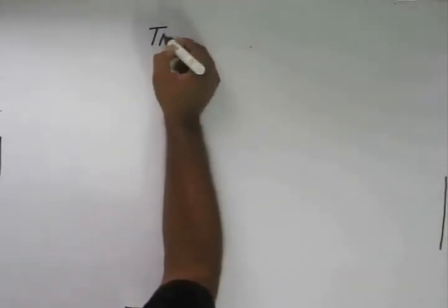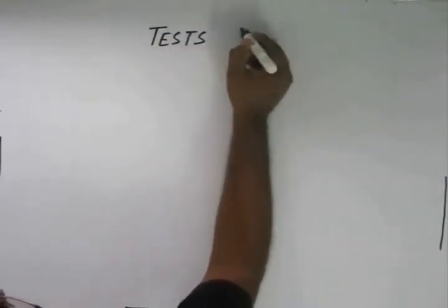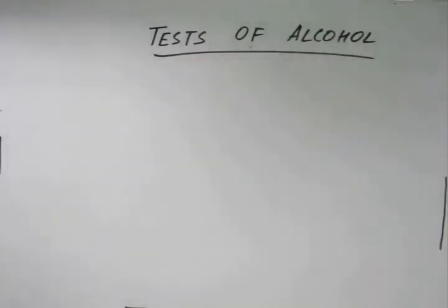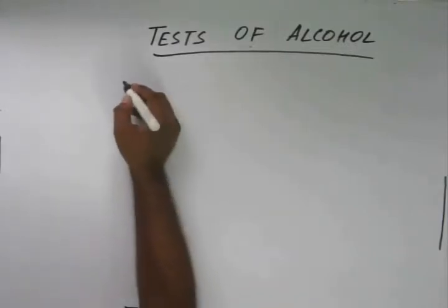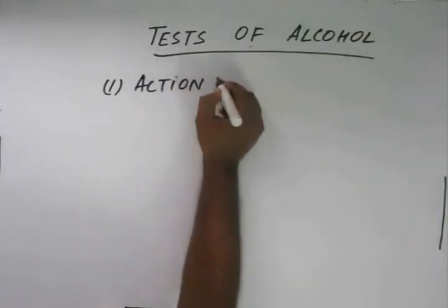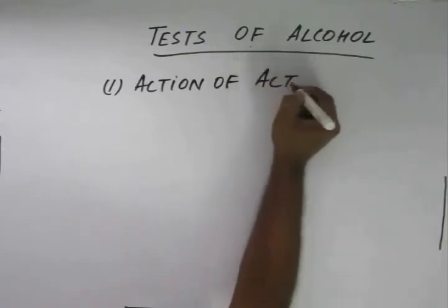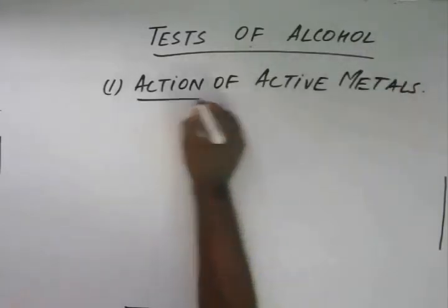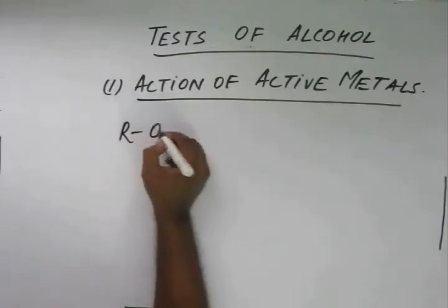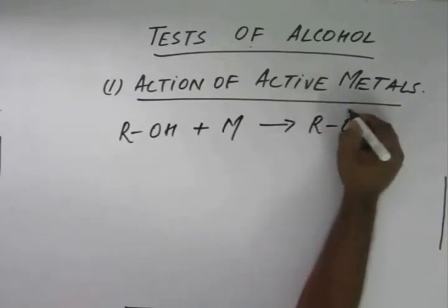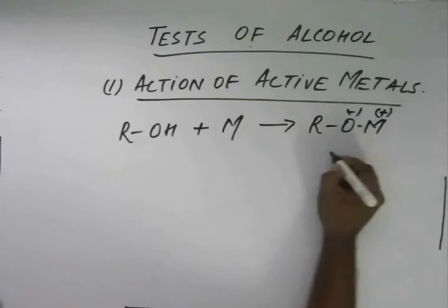Hi folks, today we will start with some tests of alcohol. The very first test that we have already gone through is the action of active metals on alcohols — it's just a recapitulation of what we have done before. Alcohols, when they react with active metals, liberate hydrogen gas.